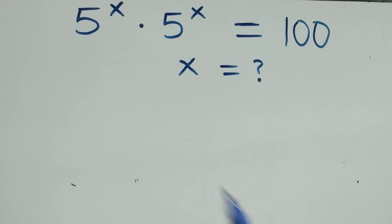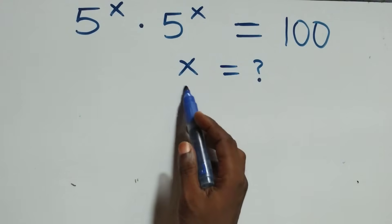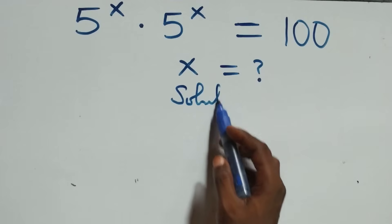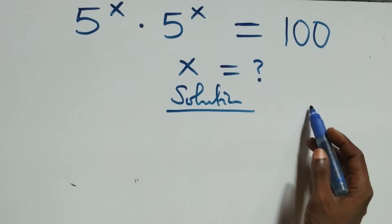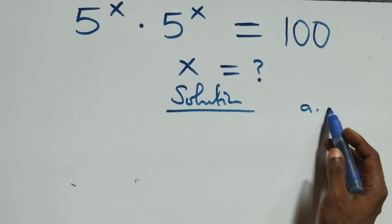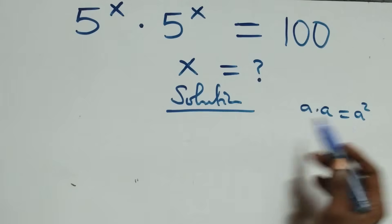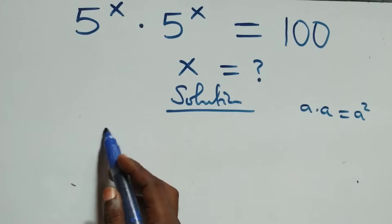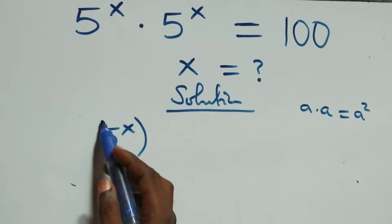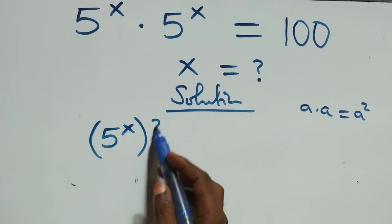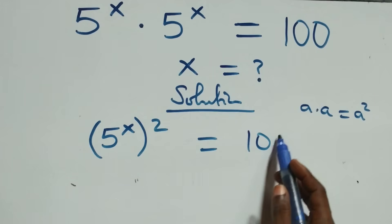Welcome. How to solve this nice exponential equation. What we have here: a times a is the same thing as a squared. At this same thing multiplying here, we have 5 raised to power x, squared, which is equal to 100.